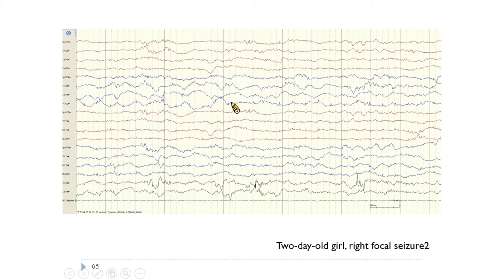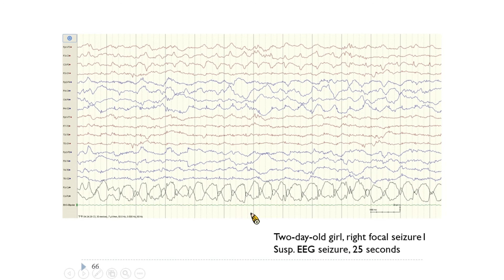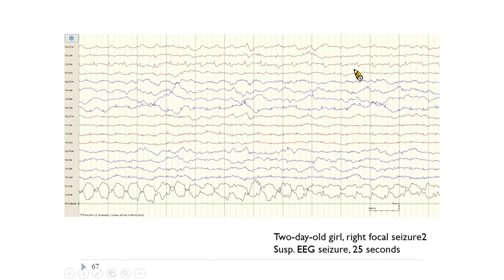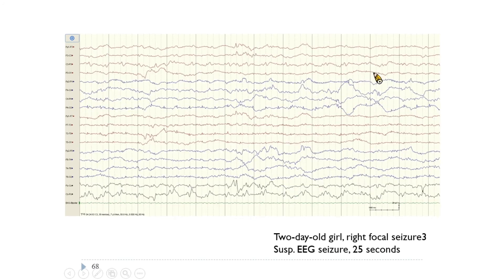These periodic discharges — there should be an EKG channel. Over the next three consecutive pages, you can see periodic discharges from the left central area with a suspected phase reversal of positive polarity, then negative. Rhythmic discharges at about 2 Hz then vanish without clinical signs. We suspect this is a 25-second EEG seizure.